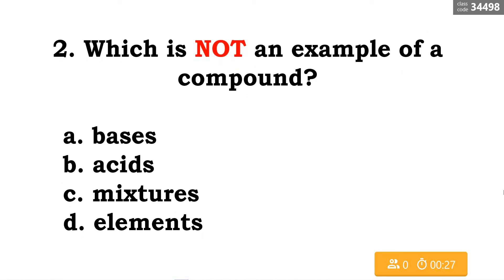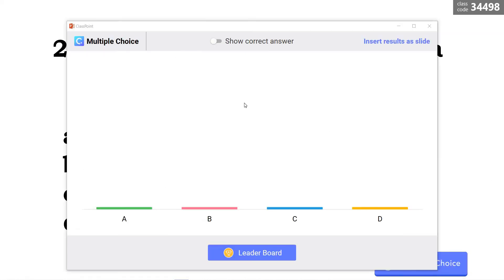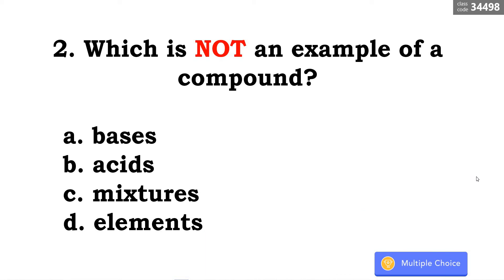Let's have number two. Which is not an example of a compound? A. Bases, B. Acids, C. Mixtures, D. Elements. The correct answer is letter D — elements.